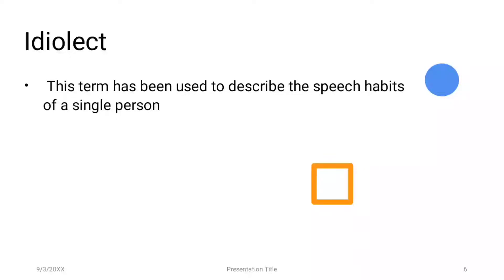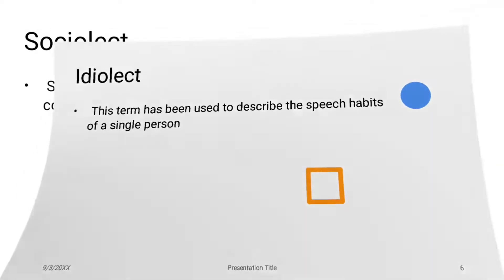Idiolects work with an individual. A dictionary of linguistics in 1954 writes that idiolect is an identifiable pattern of speech and characteristics of an individual — basically an individual person's characteristic. We call it idiolect.